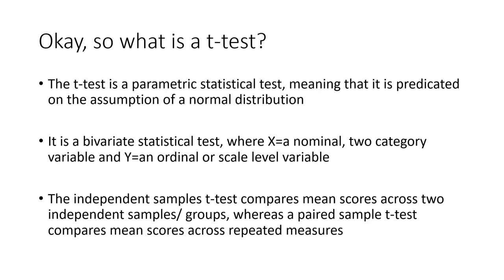What do I mean by a parametric statistical test? A parametric test is a statistical test that's predicated or based on the assumption of a normal distribution. You'll recall from Chapter 4, we talked about a normal distribution and how knowledge of the geography of a normal distribution is the mechanism that enables us to generalize from a sample to a population. So a T-Test assumes that the dependent variable is normally distributed.